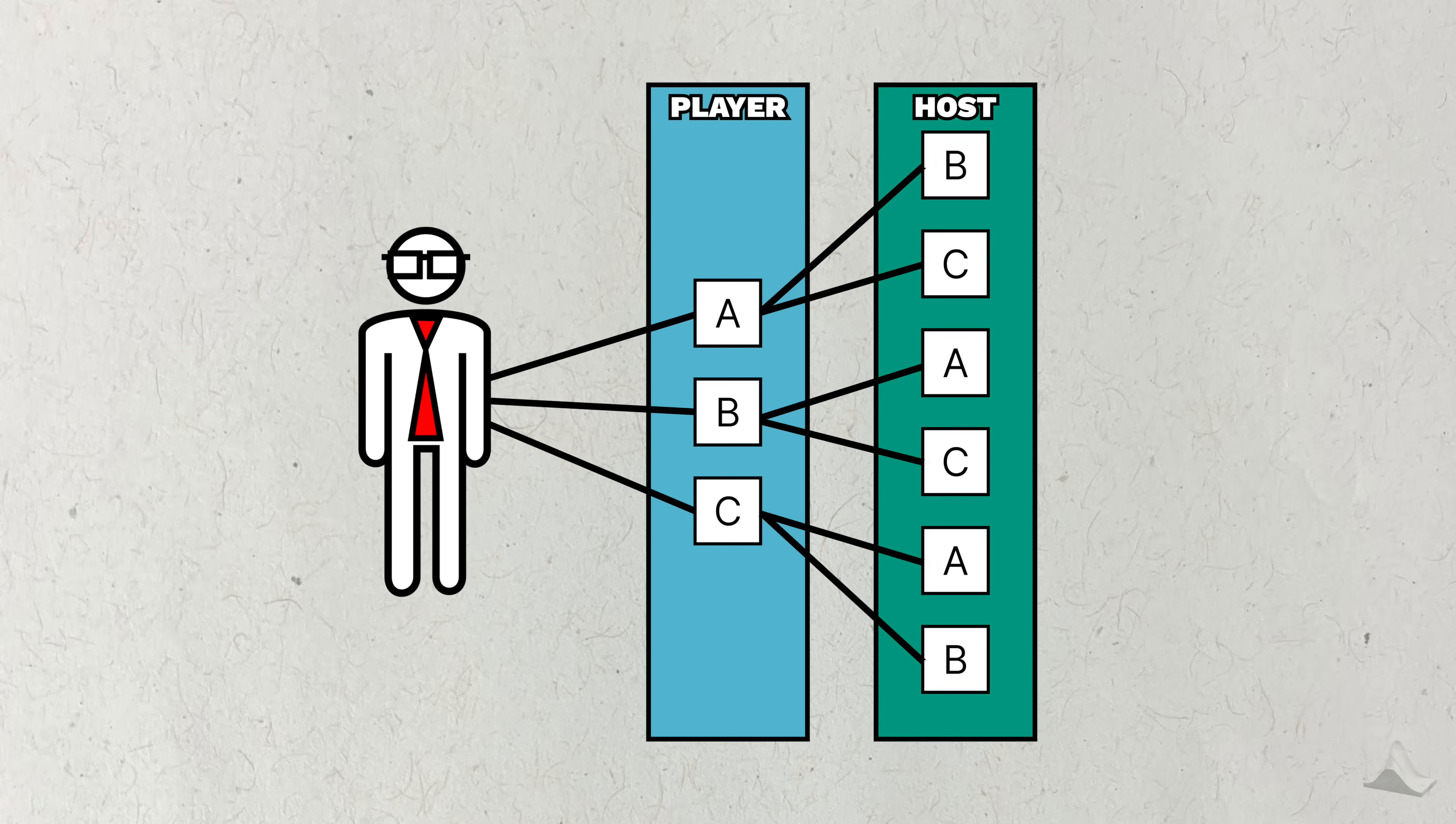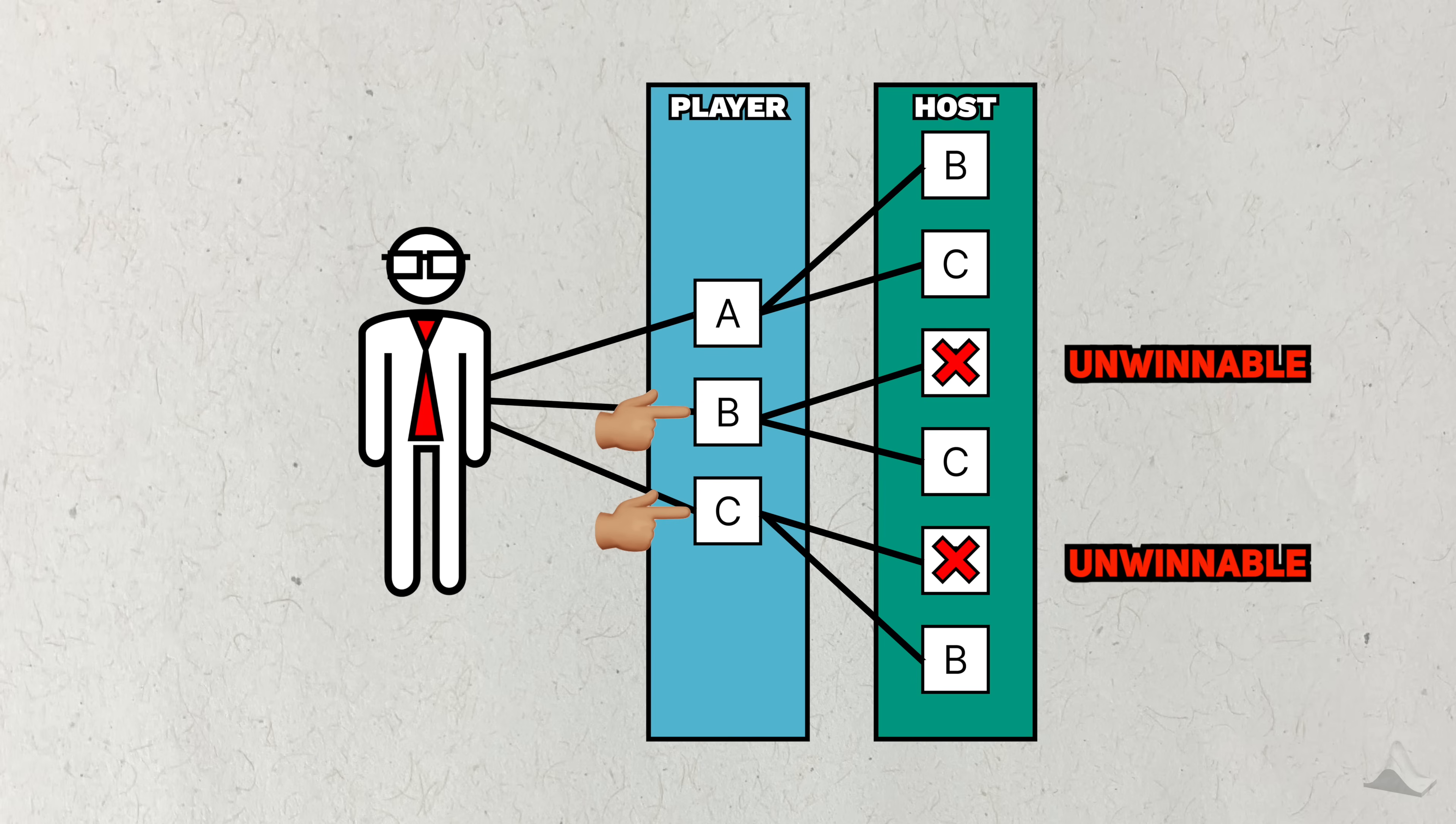Next, the host reacts to the player's choice and seals off a second door. If the player picks B or C, then the host can only pick the other door that doesn't have the cash prize. The host can't pick the A door, because then it makes the game unwinnable, and opens him up to getting sued.